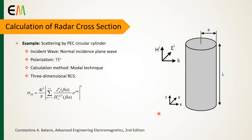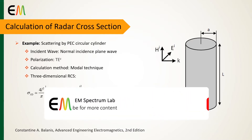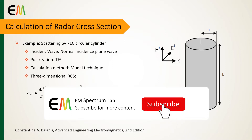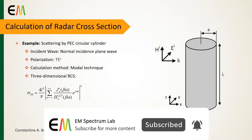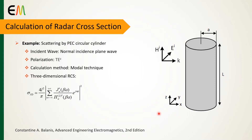In this video, as an example, the monostatic and bistatic RCS of a PEC cylinder are computed by CST under normal incidence plane wave with TE polarization. After simulation, the results are compared with the theoretical formula obtained using the modal technique. So let's start the simulation.